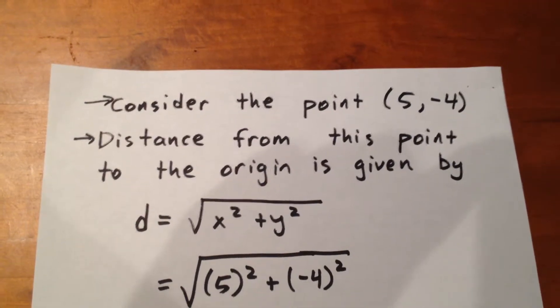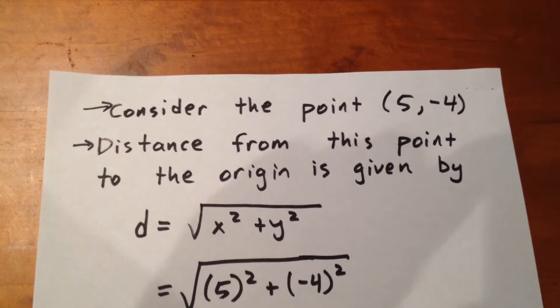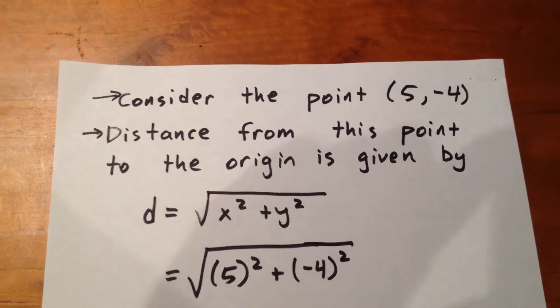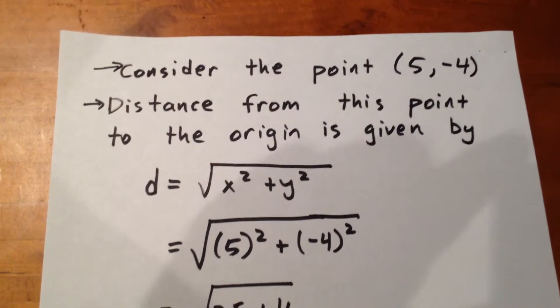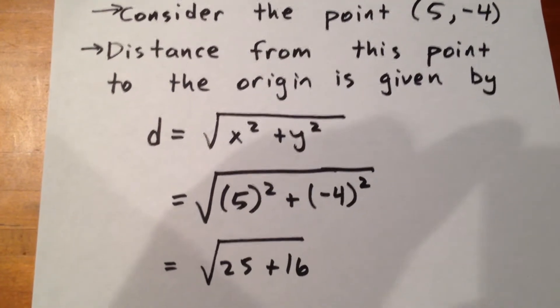So we determine the distance from the point 5, negative 4, to the origin by using the distance to the origin formula, which is just the square root of quantity x squared plus y squared.